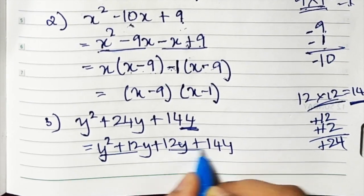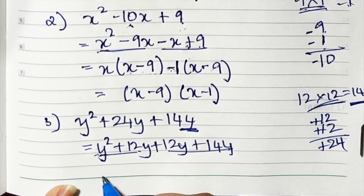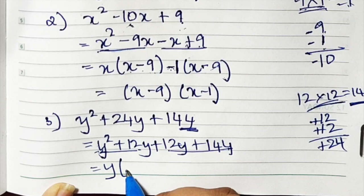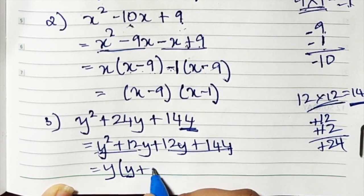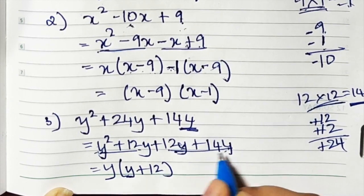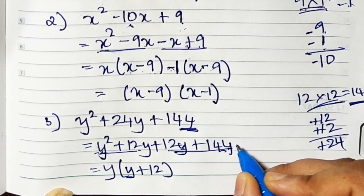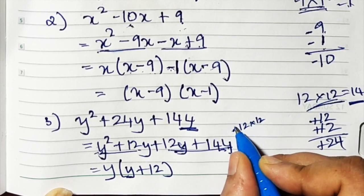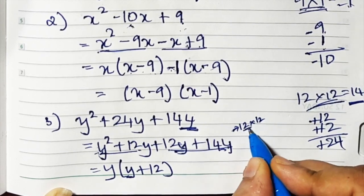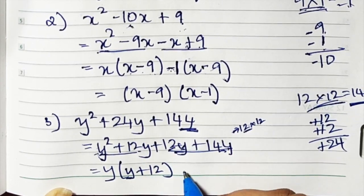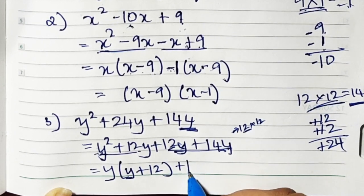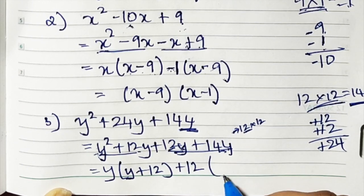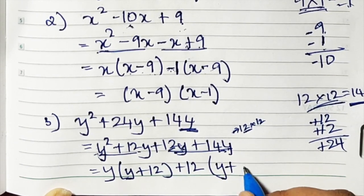Now form two groups. What is common here? Y is common here, so y goes out. What remains inside? 1y has gone out, so 1 is still remaining — y plus 12. Now here, 12 is common because 144 is 12 into 12. So one 12 from here goes out. 12 is positive. If you don't put the positive sign, it's understood. What remains inside? y plus 12.